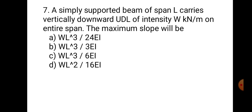Question number seven. A simply supported beam of span L carries a vertically downward UDL of intensity W kN/m on the entire span. The maximum slope will be: A) WL³ upon 24EI, B) WL³ upon 3EI, C) WL³ upon 6EI, or D) WL² upon 16EI. For a simply supported beam carrying a UDL, the maximum slope is WL³ upon 24EI. Hence, the answer is A: WL³ upon 24EI.